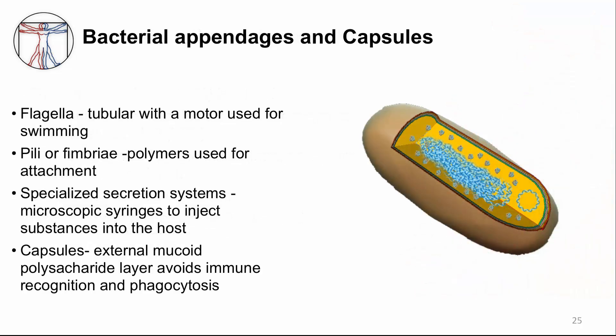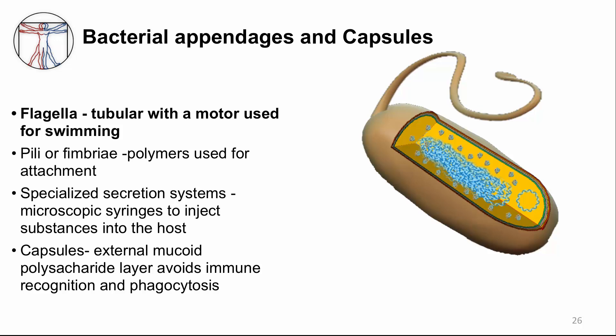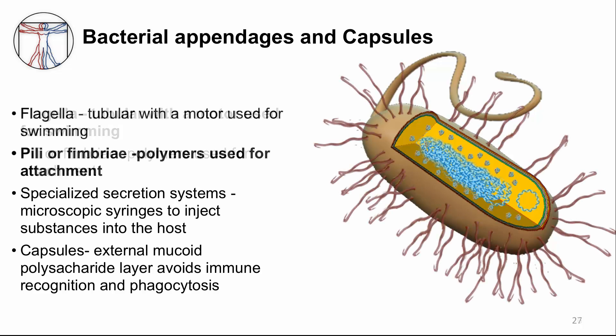All the structures discussed so far are in all bacteria. There are other structures that are not in all bacteria — these optional structures of the bacterial envelope can be quite important in colonizing us or causing disease. For example, many bacteria swim propelled by rotating flagella, which are tubular polymers anchored to a nanomotor. The envelope may also be covered with structures like fimbriae or pili — long polymers with a molecular hook at the end that allows bacteria to attach to cell surfaces or to each other.